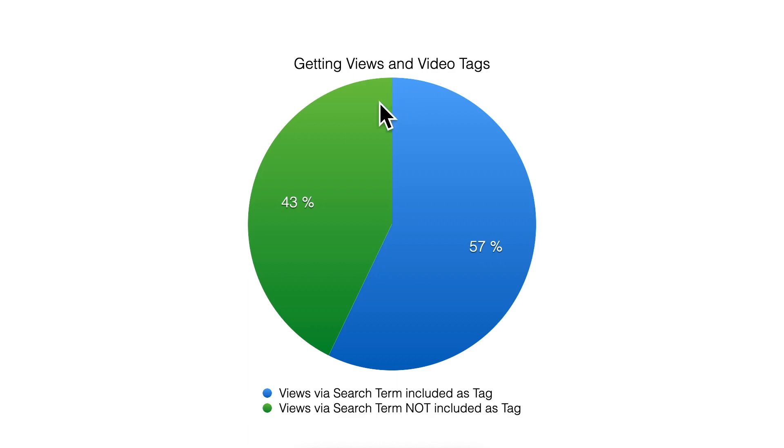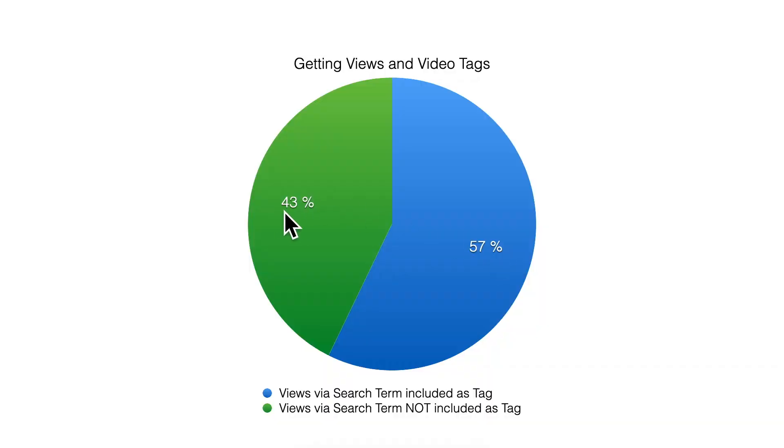I looked at well above a hundred thousand videos and search terms and found that 75% of all views those videos get are from search terms that are included in the tags. But still, 43% of all the search terms that bring those videos views are not included in the tags. So the algorithm has the ability to rank your videos for search terms you didn't even think of.